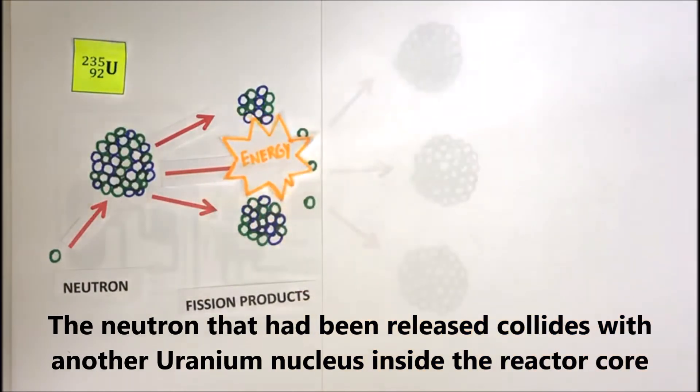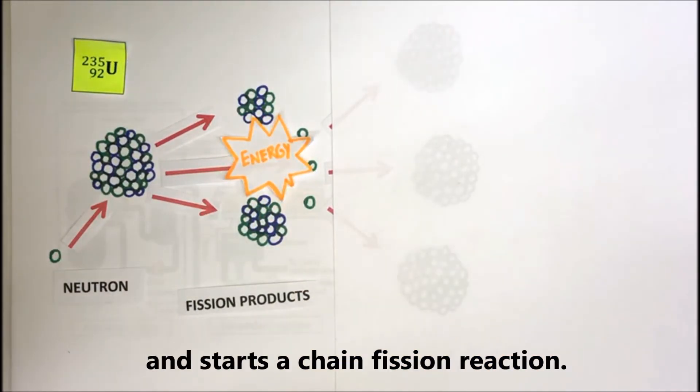The neutrons that have been released collide with another uranium nucleus inside the reactor core and start a chain fission reaction.